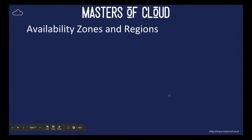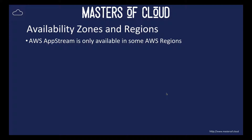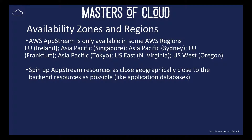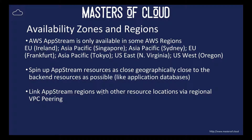AppStream is only available in some AWS regions — I think there's seven in total: Ireland, Singapore, Sydney, Frankfurt, Tokyo, Northern Virginia, and Oregon. It's recommended to spin up AppStream resources as geographically close as possible to back-end resources. For example, if you're spinning up a line of business application with a big database, spin those resources up in the same AWS availability zones for low latency. We can also link AppStream regions with other resource locations via regional VPC peering.